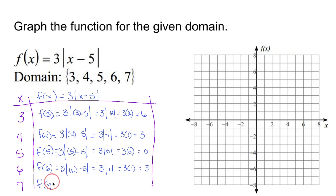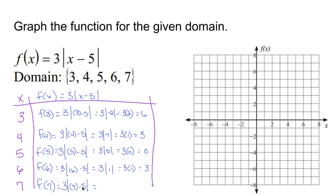F of seven is going to equal three times the absolute value of seven minus five. Inside the absolute value I have seven minus five, which is two. The absolute value of positive two stays positive two, so three times two is six.